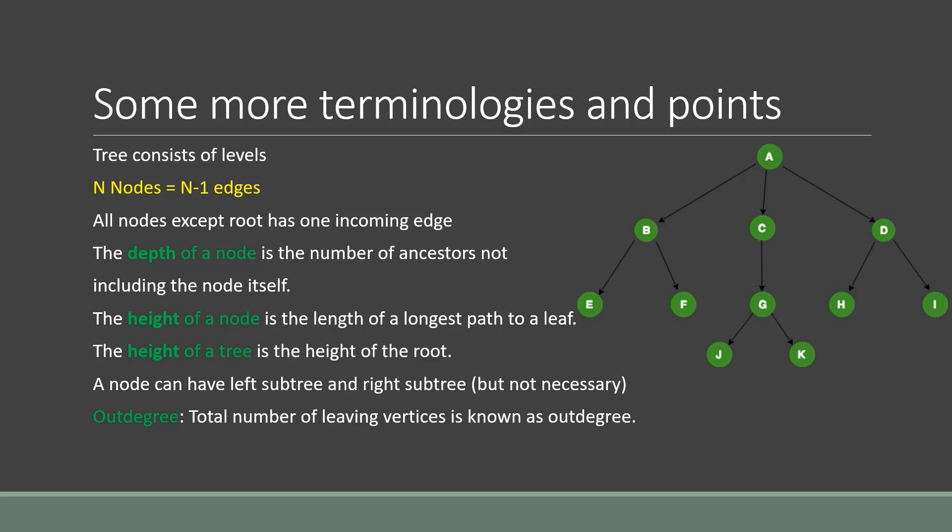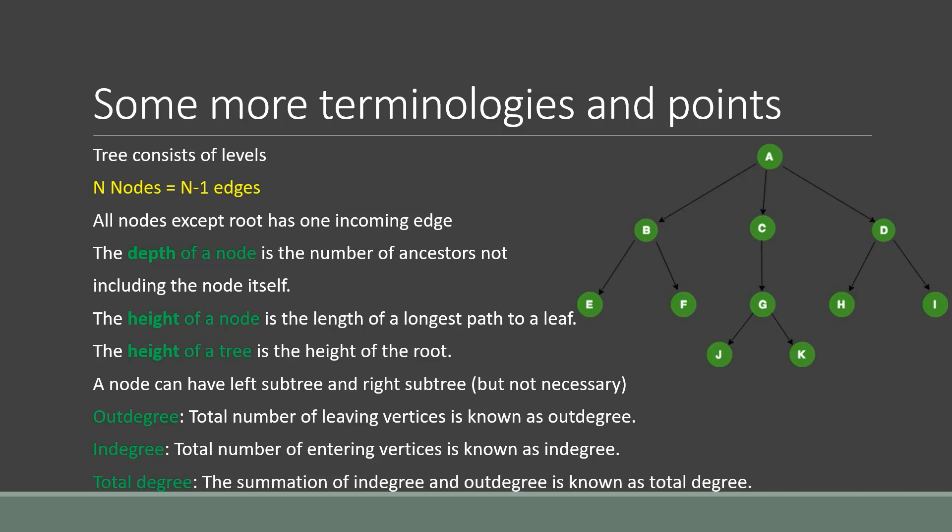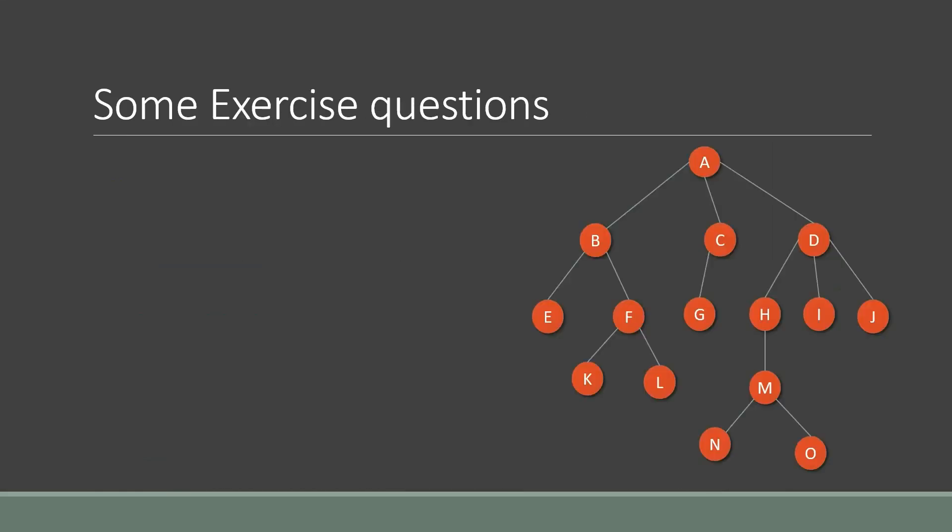The degree of a node considers its incoming and outgoing edges. The in-degree is the number of incoming edges and the out-degree is the number of outgoing edges. For node G, the in-degree is 1 and the out-degree is 2, so the total degree is 1 plus 2, which equals 3.